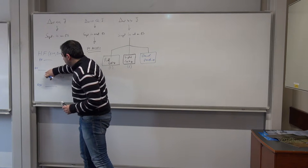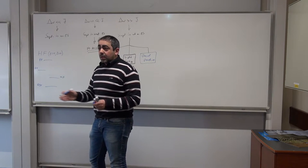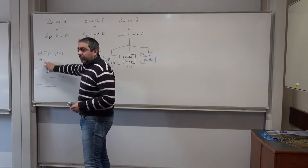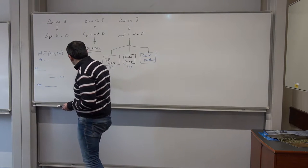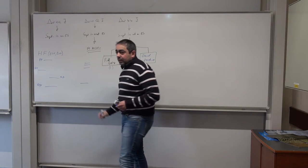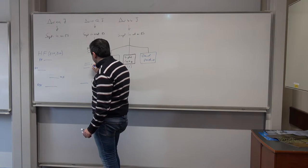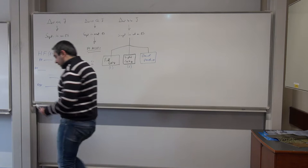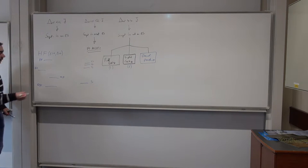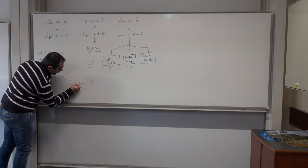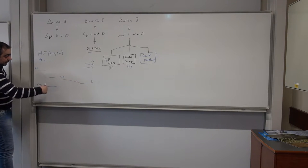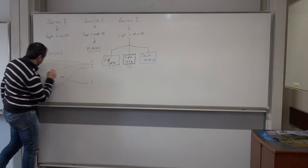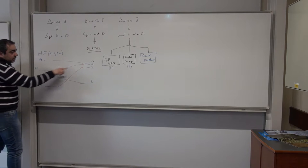Now if we look at the same spin system but change the field — lowering it from the high field, say a few tesla, all the way down to zero — what we found out previously is that the states change into singlet and triplet states. If you follow that in a simulation, you find that the alpha-beta state moves into the singlet state, and the other three coalesce into the triplet manifold. Specifically, beta-alpha goes to the central triplet state, and the other two go to the outer triplet states.